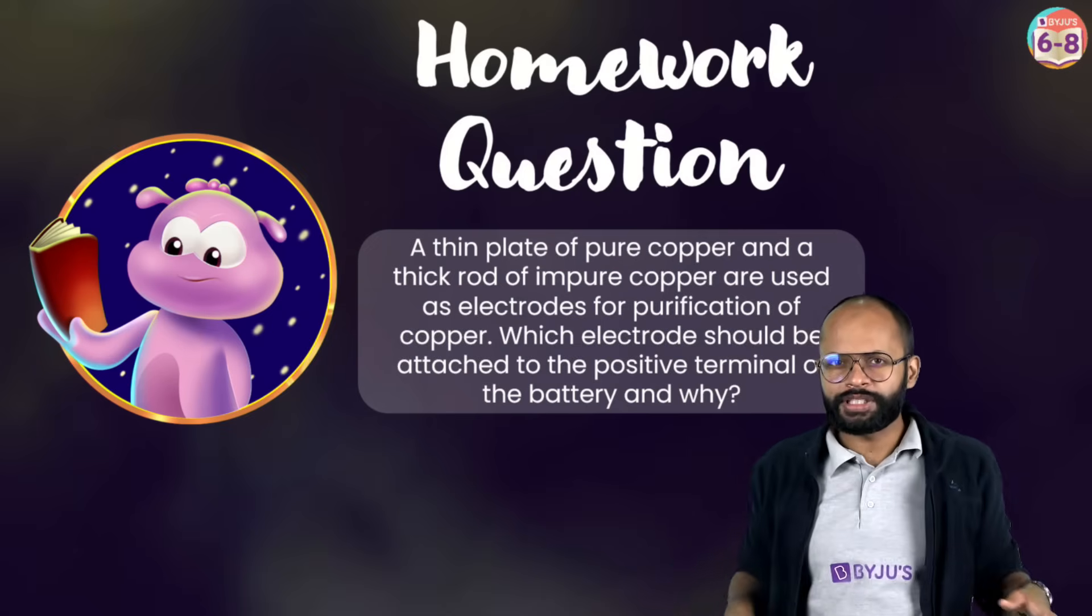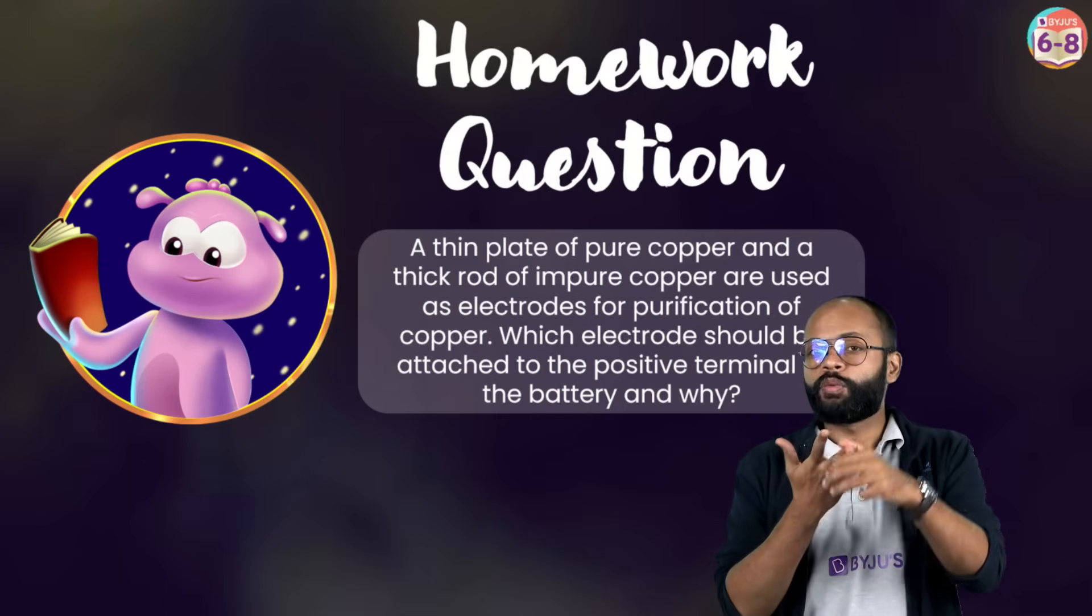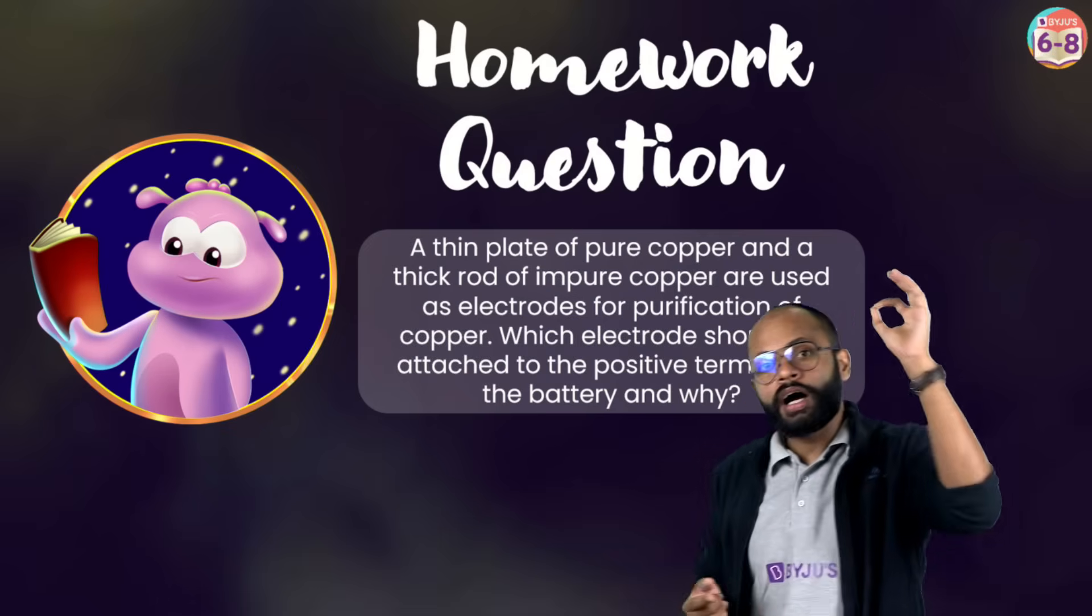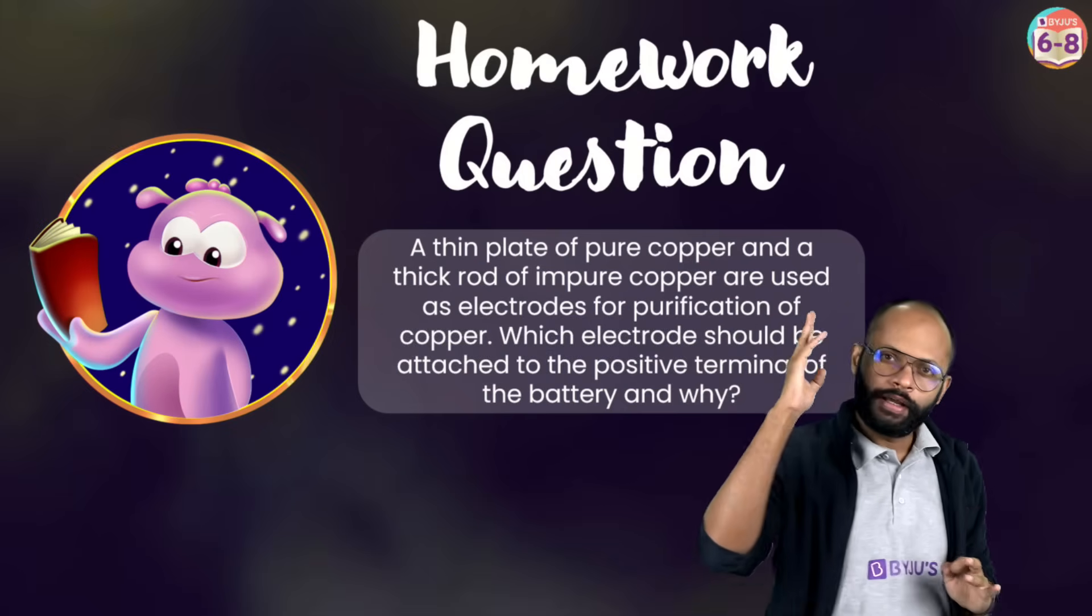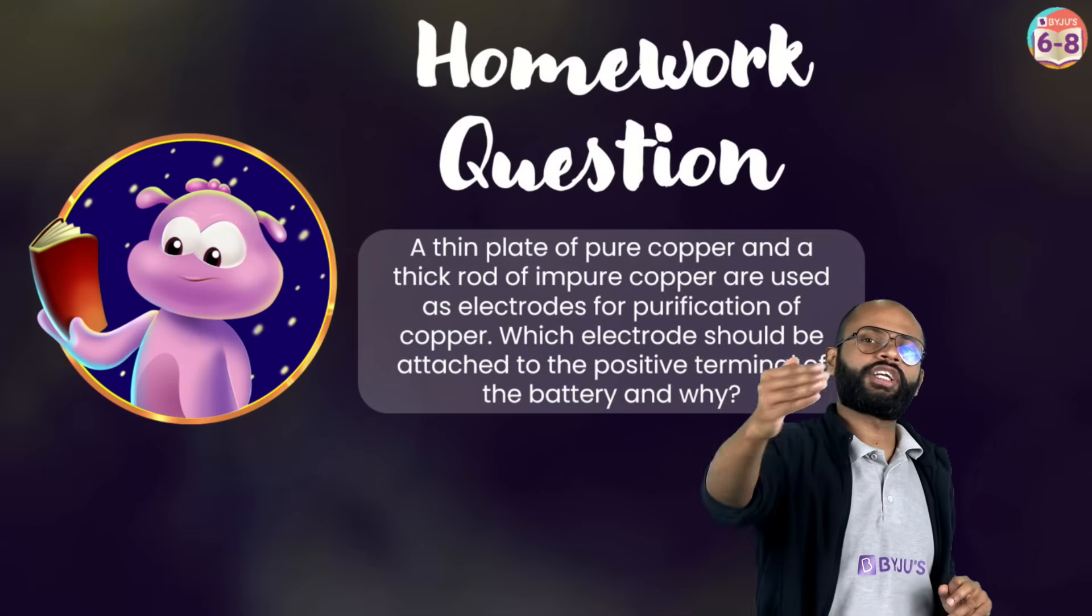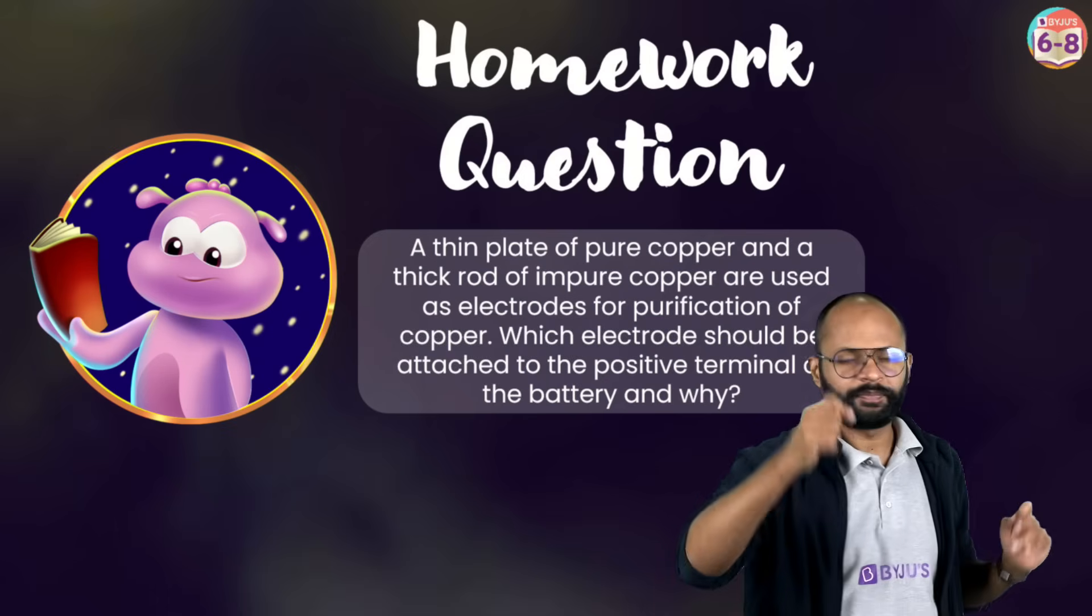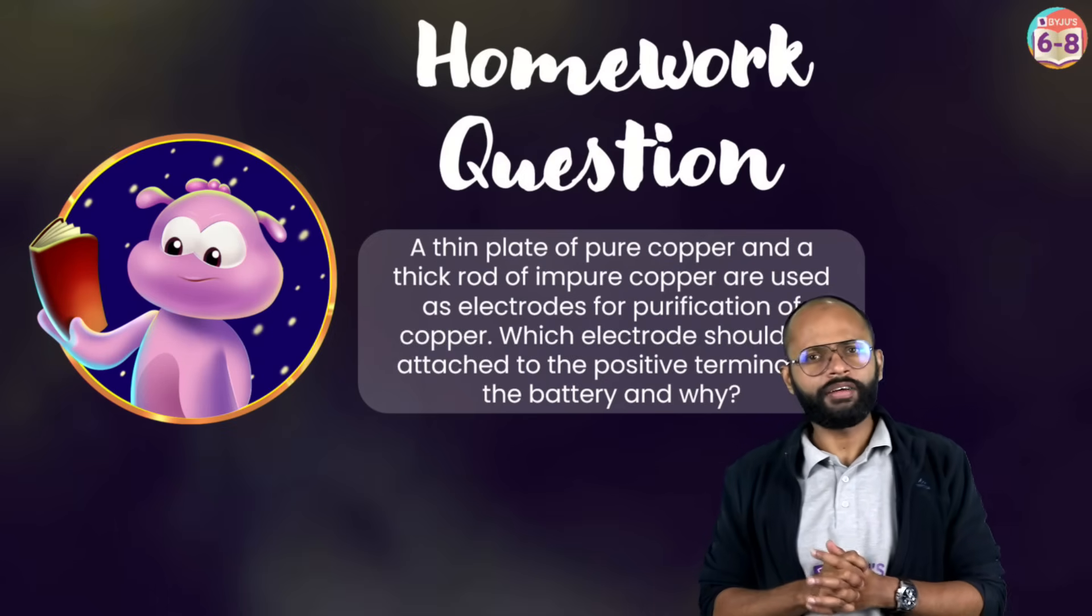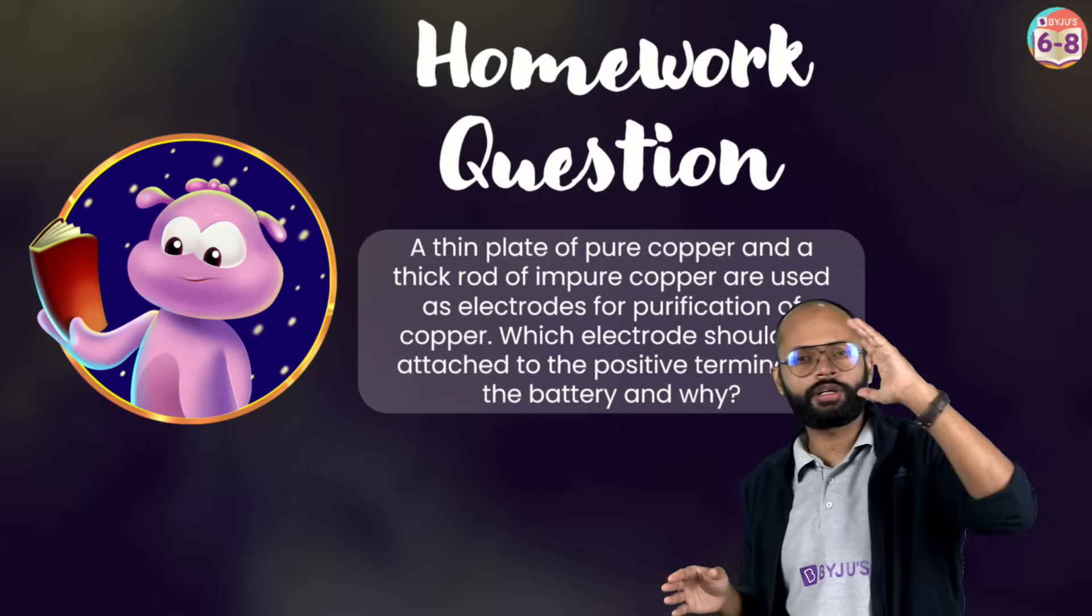So people, with this we are done with chemical effects of electric current. I told you it's a very simple chapter. Important things about this chapter: first of all, conductors, insulators. What is a tester? Different types of tester. Then how to make a solution conducting. Then how do you tell if chemical effect of electric current has happened? Then electroplating is very, very important. So I think that's good enough. This chapter contains this much only. It's a very small, very short chapter. I just told you everything important about this.